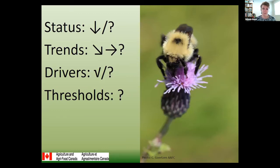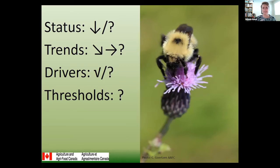Quite concerning are thresholds — we don't know how badly we can impact our insects before we're all seriously in trouble. We have seen this happen around the globe: there are some provinces in China where they've lost all their pollinators and now hand-pollinate their fruit crops. If we were in a state where we had to hand-pollinate our crops, it wouldn't work out well for the crops we depend on.